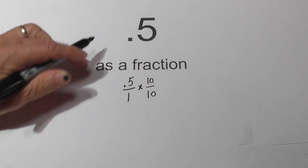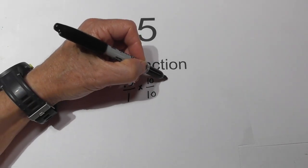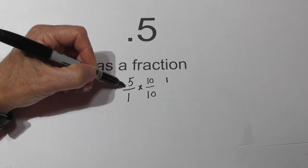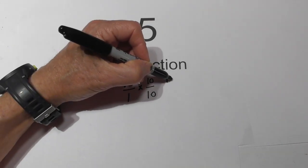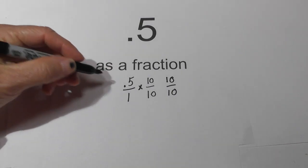We'll multiply it by 10 over 10. Another way you can do this is to write a 1 and then count the numbers to the right of the decimal. That would give you 10. It works either way.